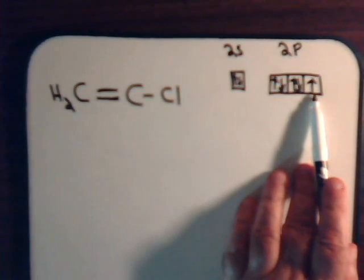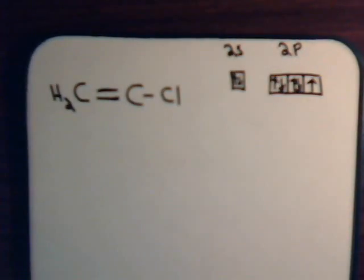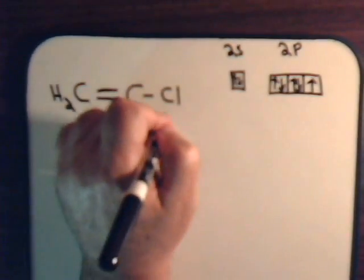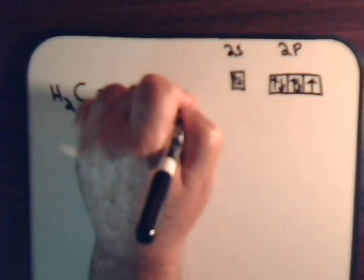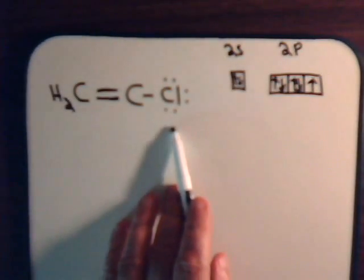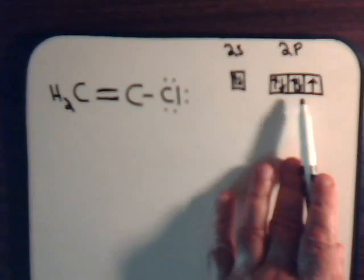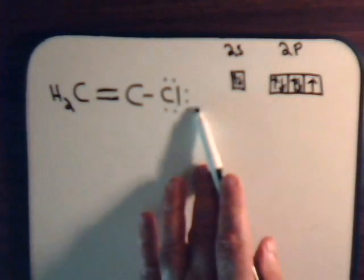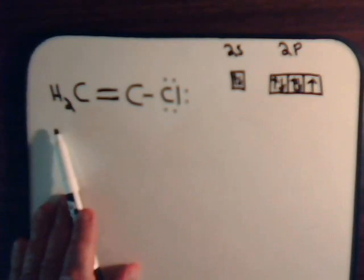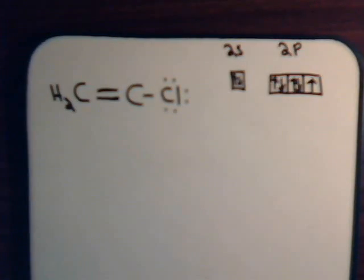This p orbital from chlorine overlaps an sp2 orbital with this carbon. So in the Lewis diagram, we would have these dots, the 2s electron, and then we have the two lone pairs of p electrons. And that's vinyl chloride, everything has an octet, it should be perfectly fine.